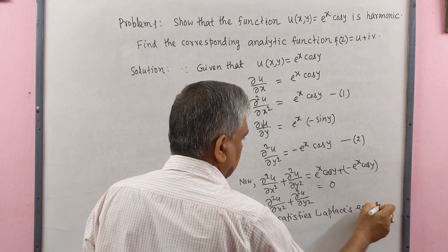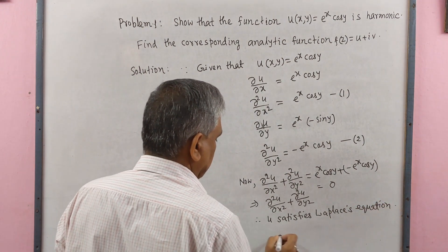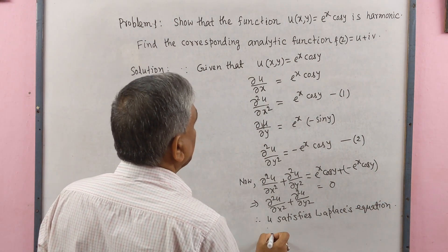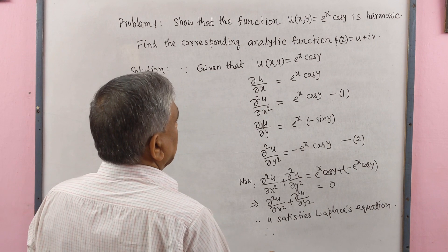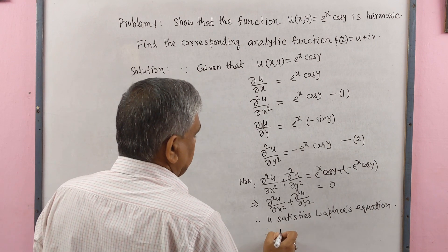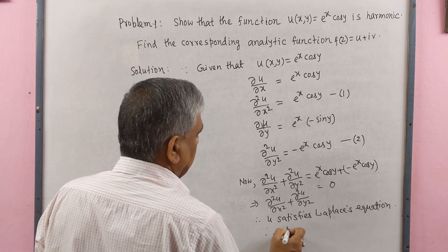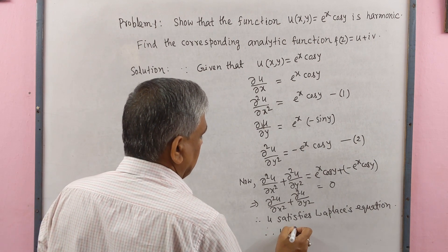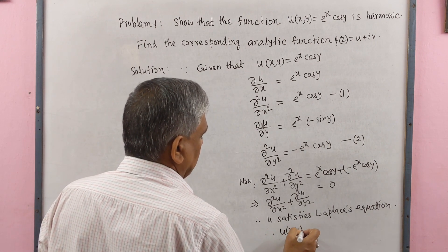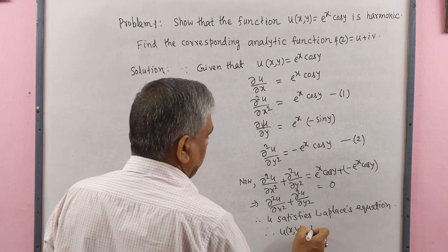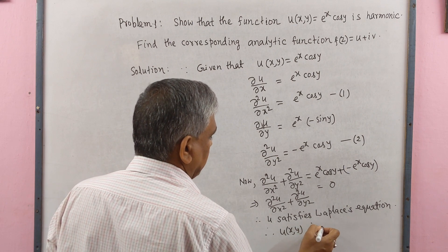Therefore ∂²u/∂x² + ∂²u/∂y² = 0, which means u satisfies Laplace's equation. Therefore u(x,y) is harmonic.